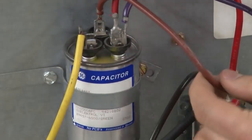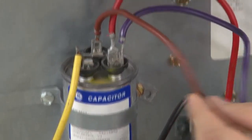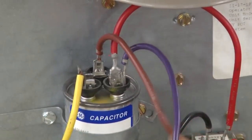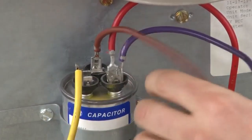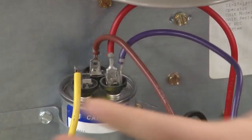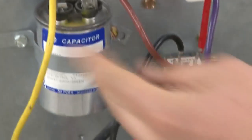One of these is for the fan, the outdoor fan, and the other one is for the compressor. Then you have a common terminal that will work with both your fan and your compressor. If it's got two terminals,